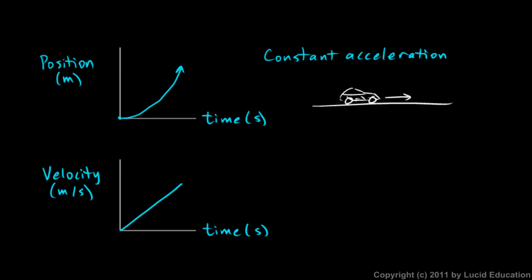Remember one of the things we said earlier in the chapter. We said that the slope of a position graph is the velocity. Now take a look at this graph. Here it has a very small slope, and as time goes on, it gets steeper and steeper.